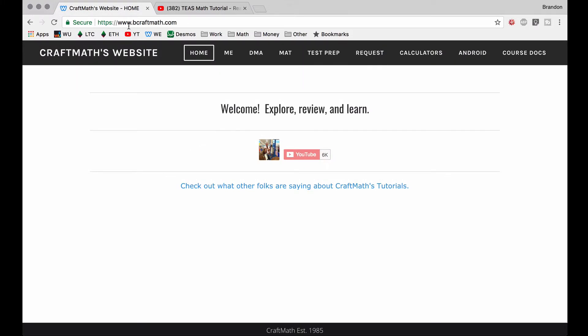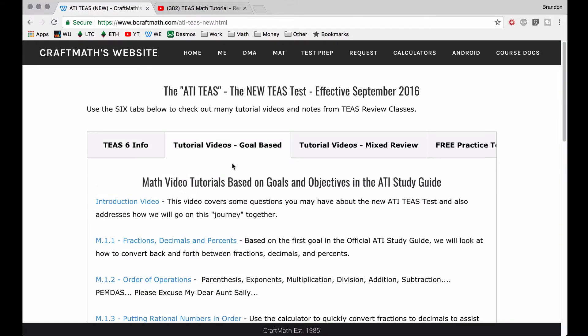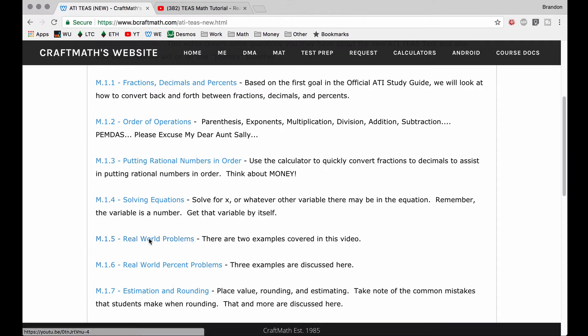You can find that video and many more by going to my website. There is a new URL, www.bcraftmath.com, underneath the Test Prep ATI TEAS, the tutorial videos goal-based, and M.1.5 is right there. So check out that square paver problem first, and now we're going to look at a very similar example, but we're going to do it a slightly different way, and in my opinion, quite a bit faster.